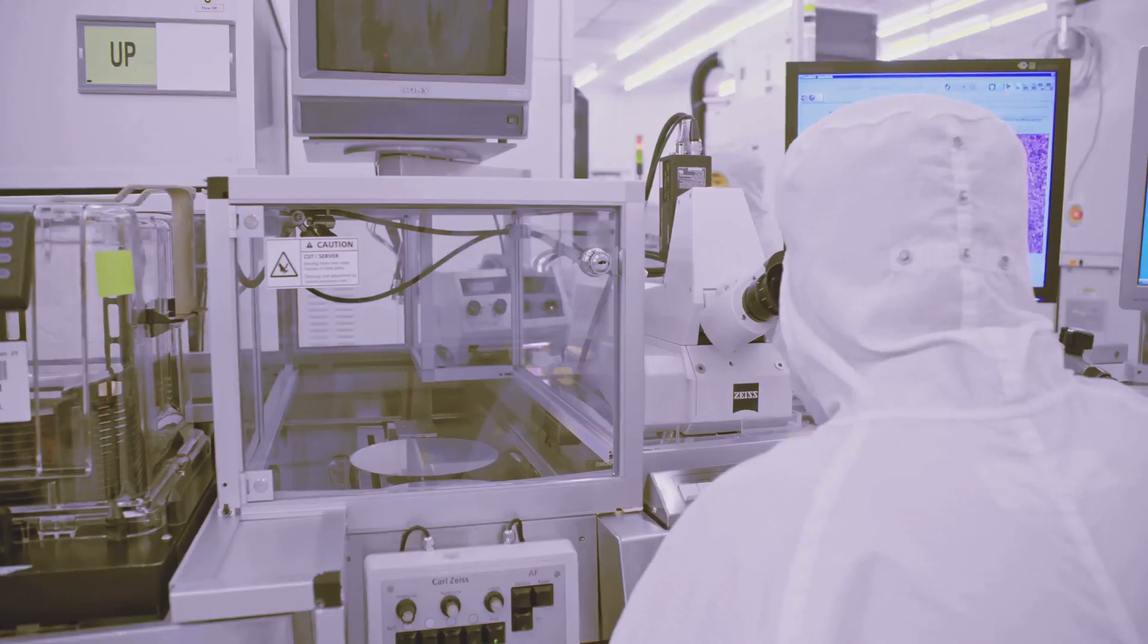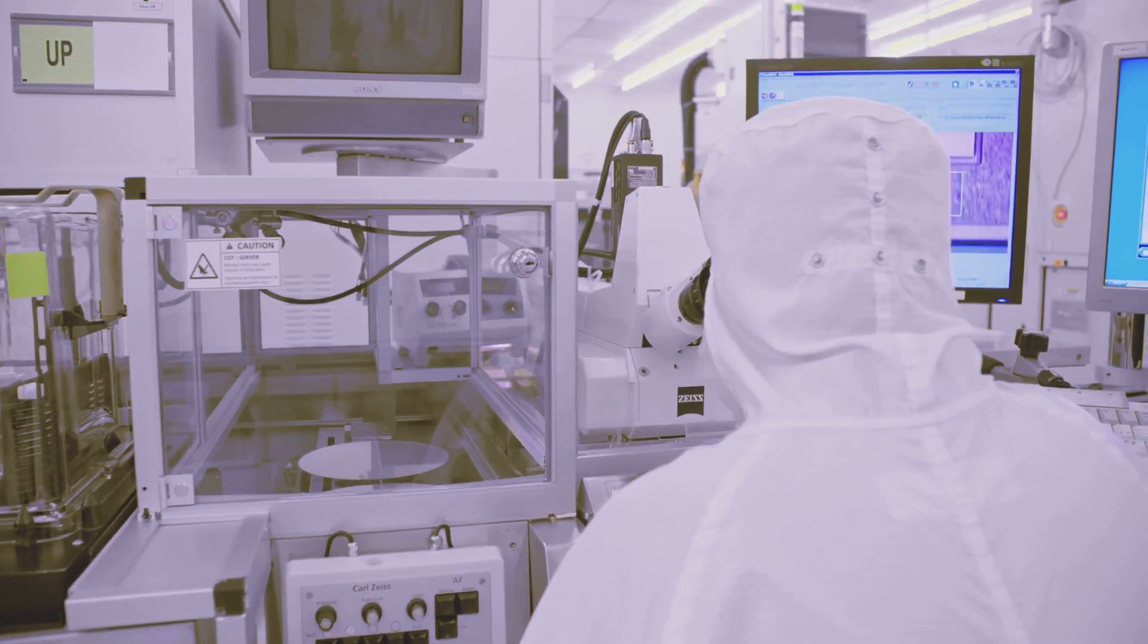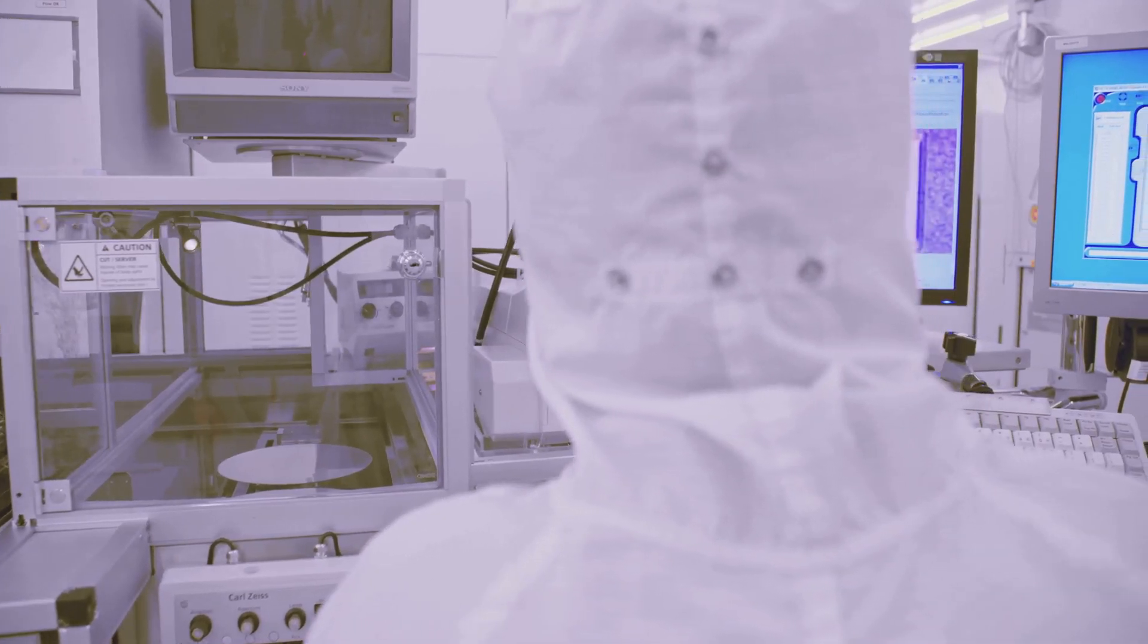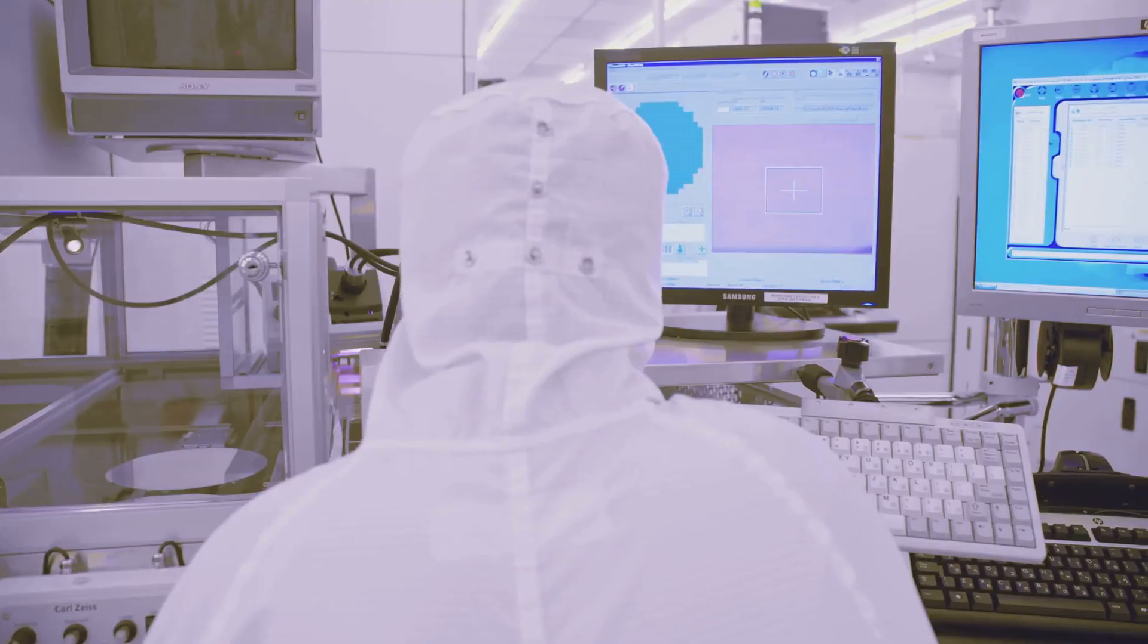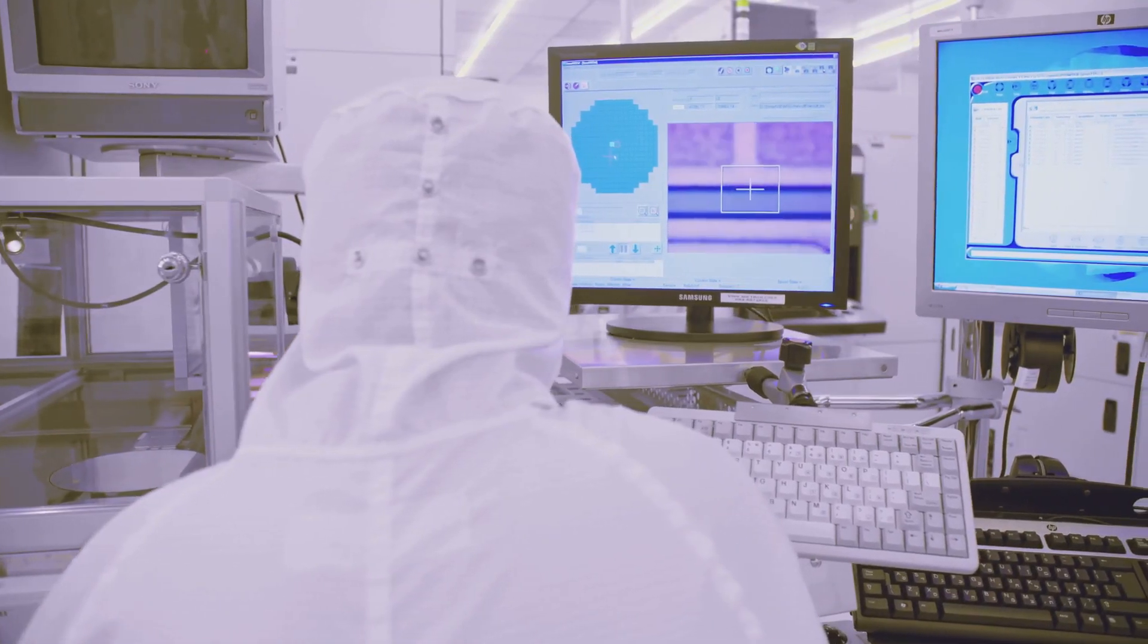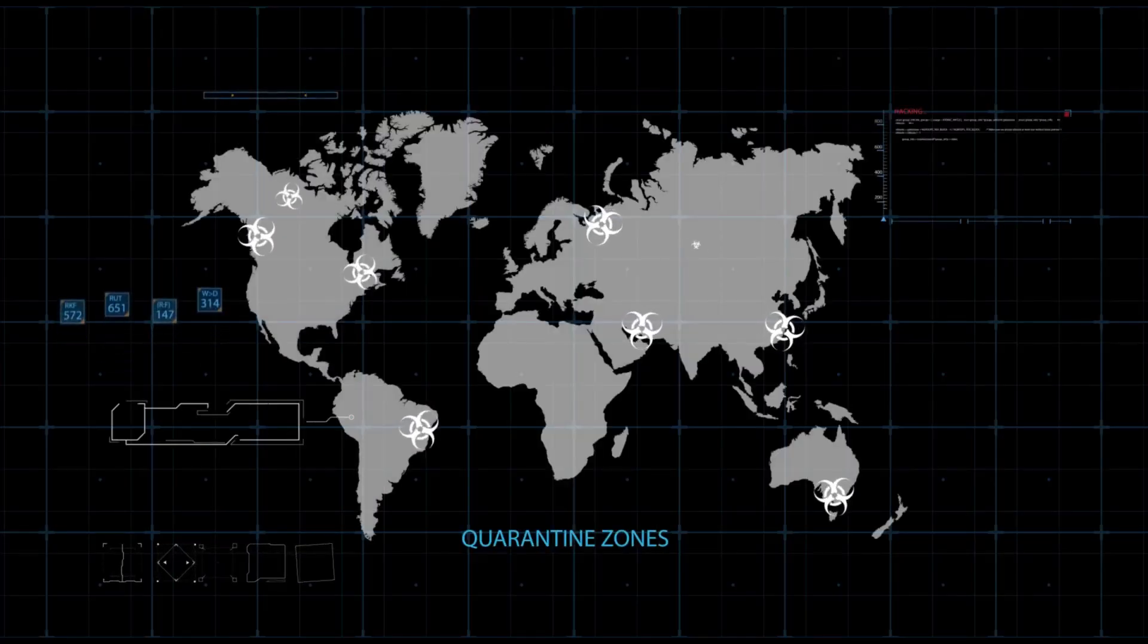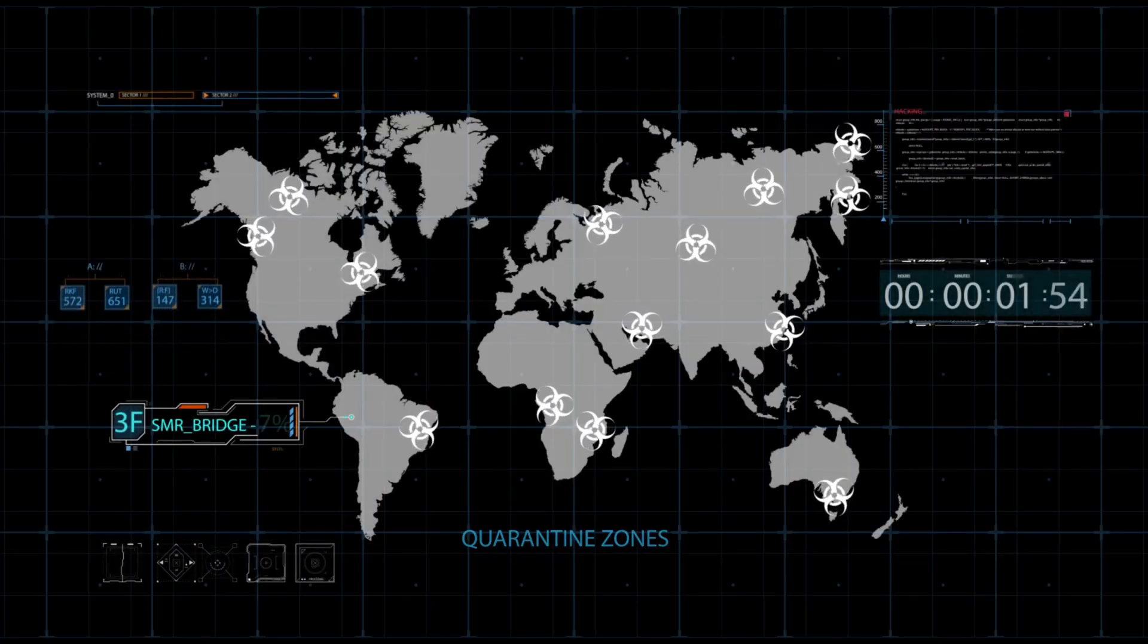ASML is the only company in the world that makes EUV lithography machines. These machines are essential for producing the most advanced semiconductor chips, which are the backbone of modern electronics. This makes them a critical player in the global technology landscape. Their innovations drive progress in various sectors, from consumer electronics to advanced computing.